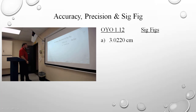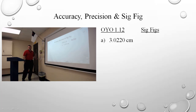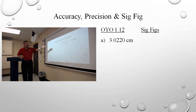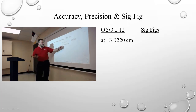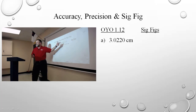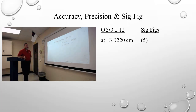So we did On Your Own 1.12 together. Let's come up with quick answers in our head. Significant figures — how many are there? There are five, right? The non-zero digits: one, two, three — those three are significant. The trailing zero is significant. This zero is between significant figures, so it's significant. So there are five.